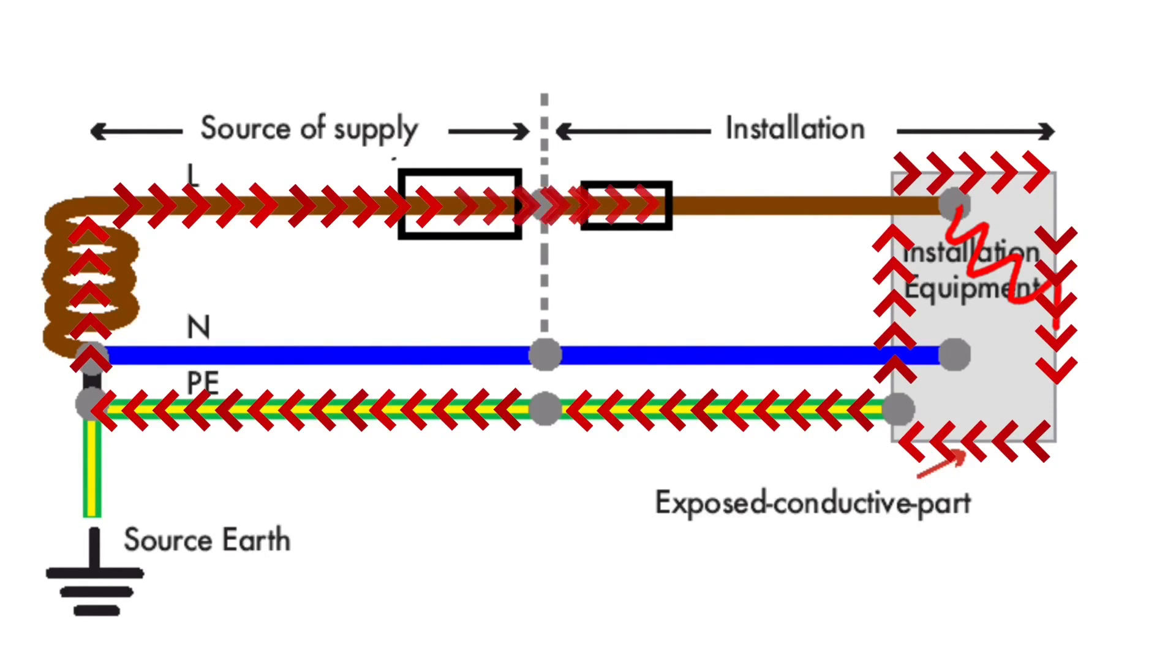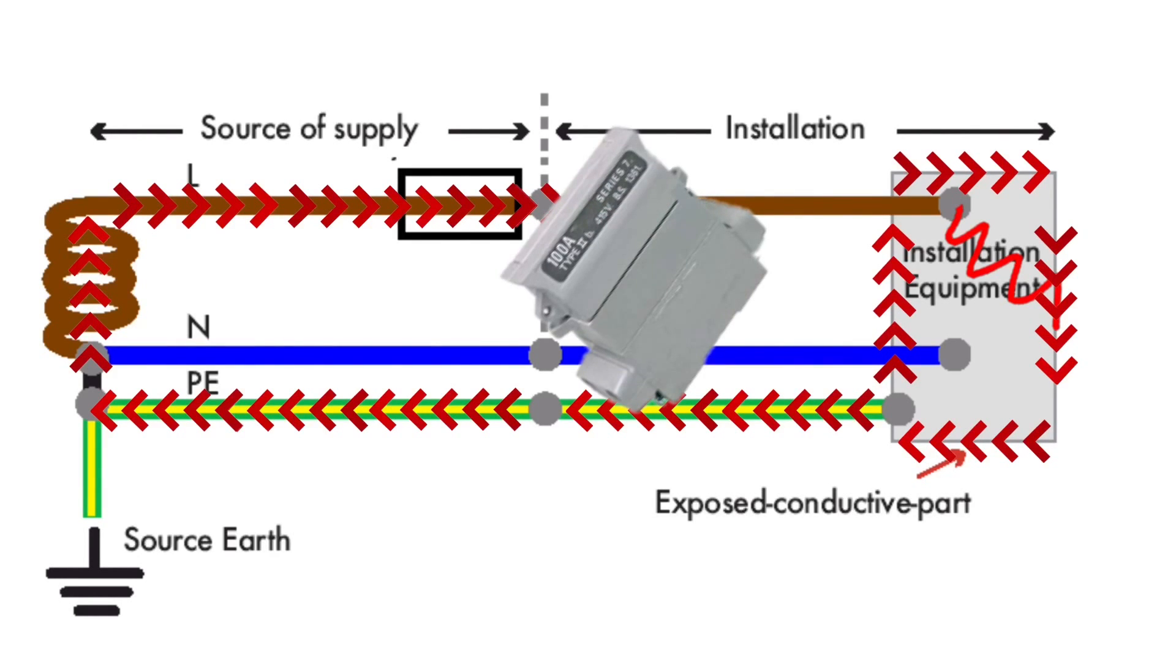The fault current will pass through the main cutout fuse rated at either 100, 80, or 60 amps but will not cause operation.